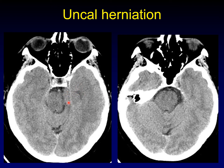A really important secondary sign is shift of the brain stem away from the affected side, enlarging the basal cisterns on the affected side from the mass effect of the uncal herniation that is happening just above this cut.